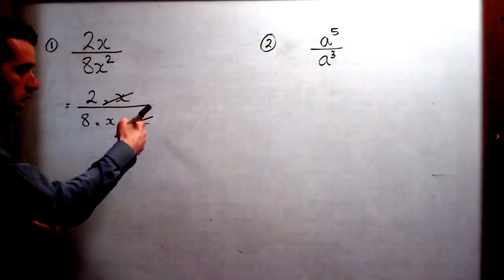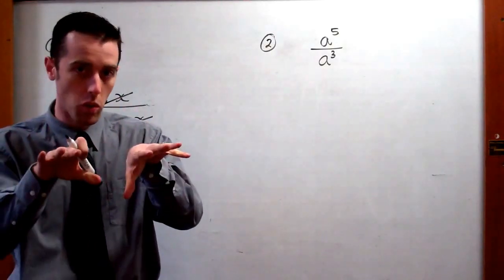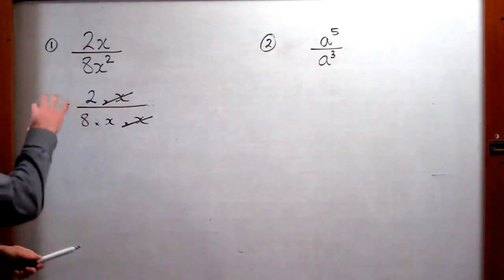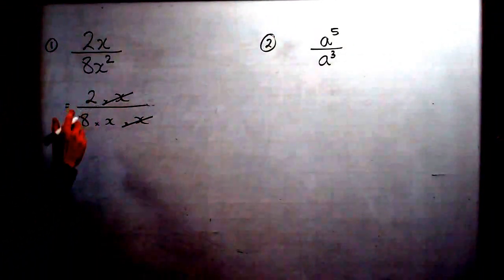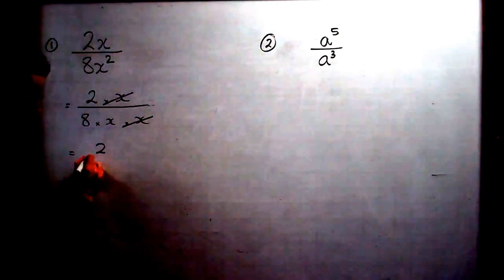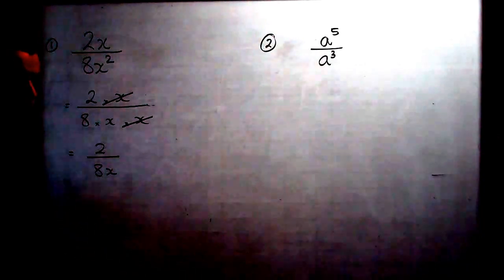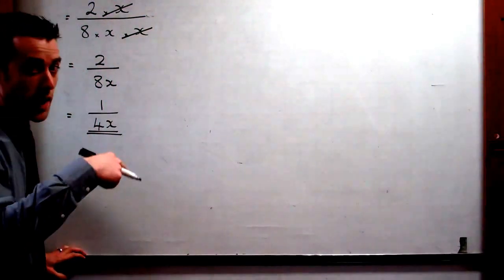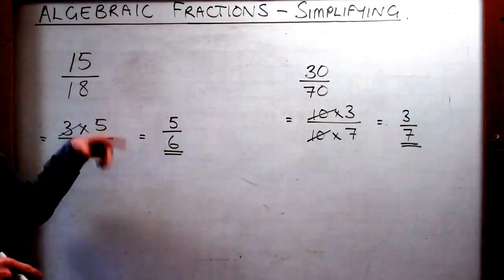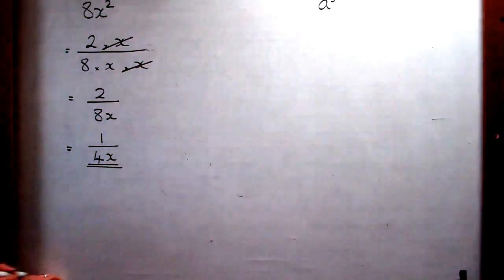We cancel one x from the top and one from the bottom — x over x is 1 — so we're using the concept of x over x being 1. This leaves us with 2 over 8x. I can simplify that further: 2 over 8 is 1 quarter. So 2 is 2 times 1 and 8 is 2 times 4; cancel the 2s, and you should know that 2 eighths is the same as 1 quarter. That's the first example.